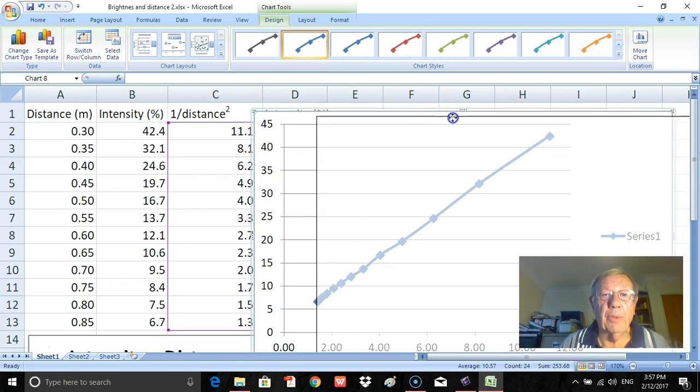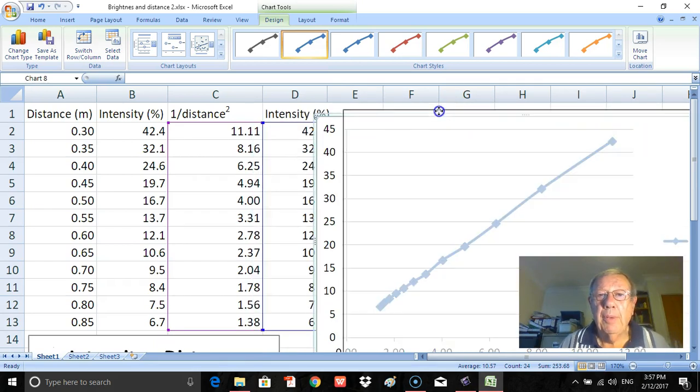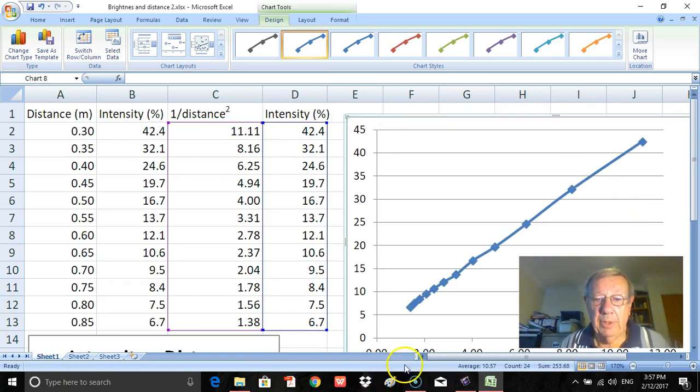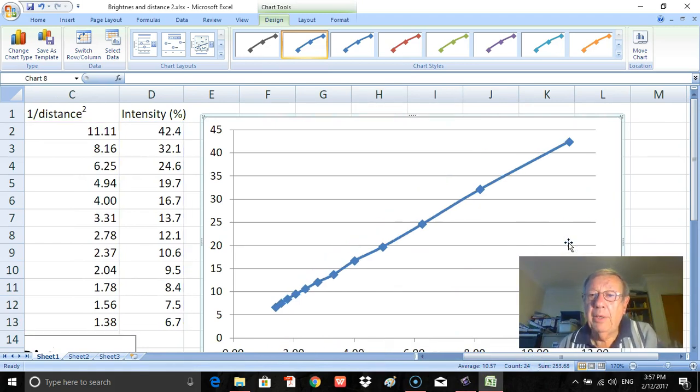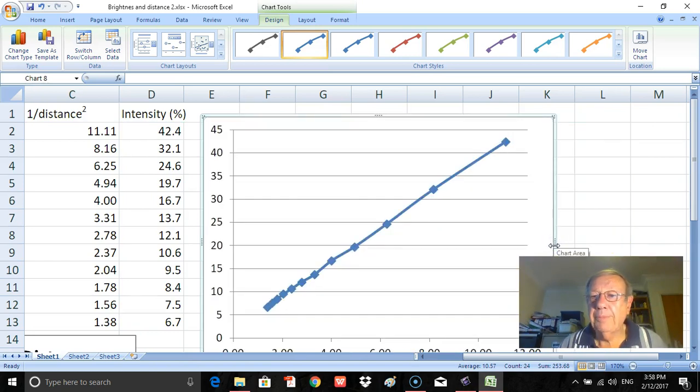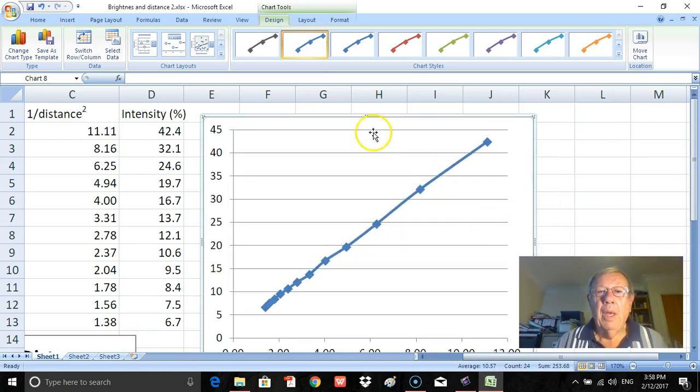And there you can see I've got a graph that looks something like a straight line, so that looks all very good. Now I do need to reposition this and to change the size. I'll move this across here, I will delete the legend here. I don't need the legend. I'll just make this a little bit smaller.